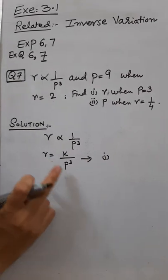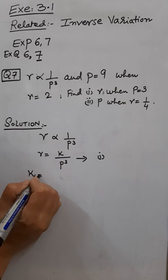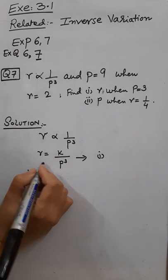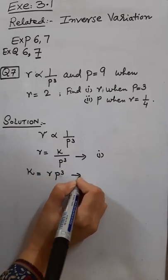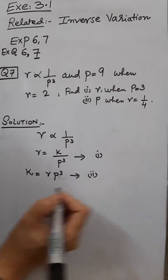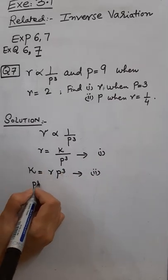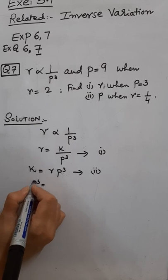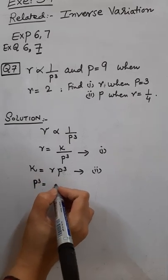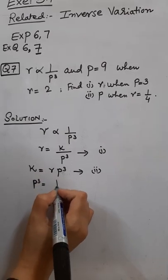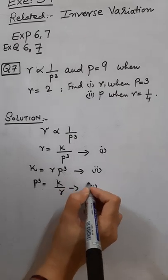From this equation, how can we find K? So K is now equals to R·P³. This is the second equation. And for P³, the third equation is P³ equals K by R. This is the third equation.